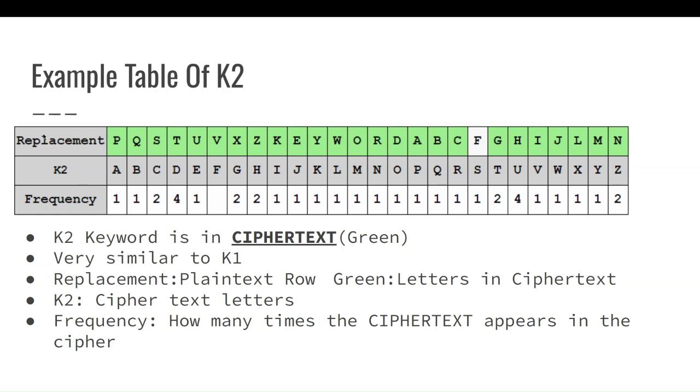And just going over it once again, replacement, that's going to be the plaintext row. Green are the letters that are in the ciphertext, and then K2 are the ciphertext letters, like all of them in general. This is going to be helpful for all of them. And the frequency is how many times the ciphertext appears in the cipher.